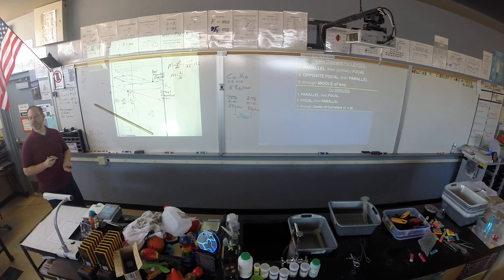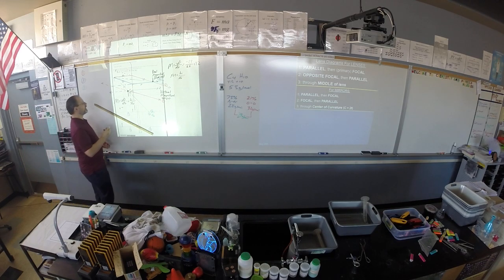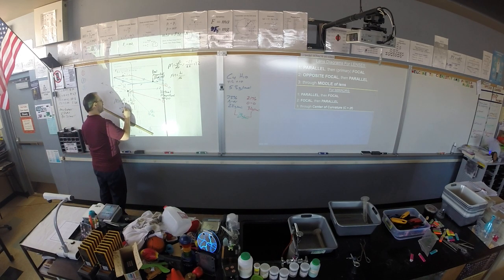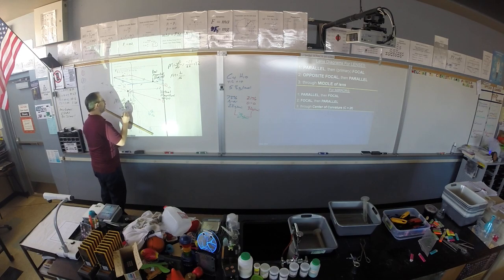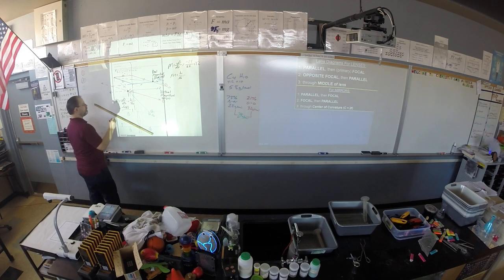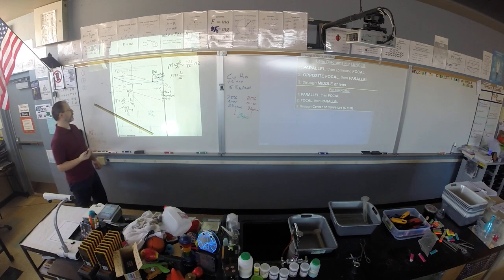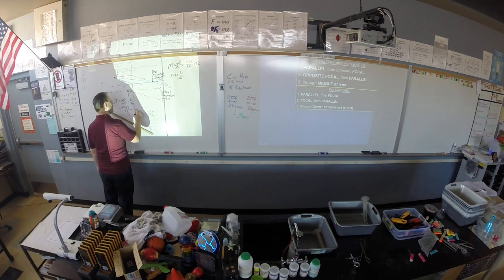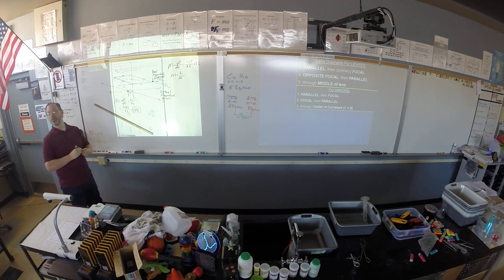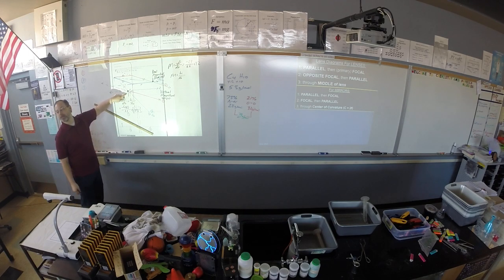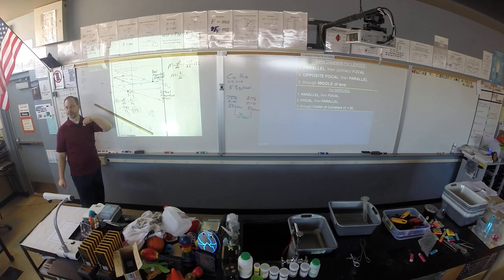So when you measure DI, what did you get? Negative 1.6 over the DO was 1.1. So this gives you a positive value of 1.45. So that's our magnification. The number larger than 1 tells you the image is magnified. And the positiveness tells you that it is upright.